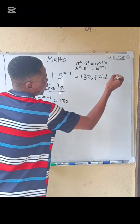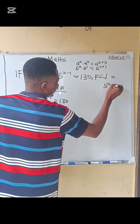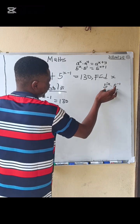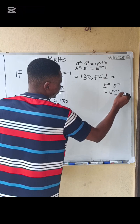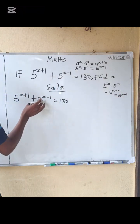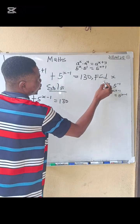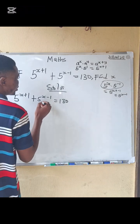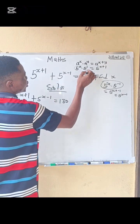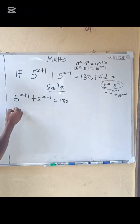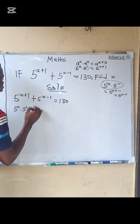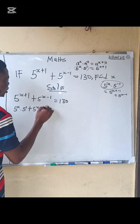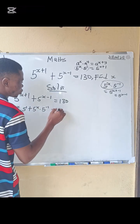Similarly, five to the power x minus one equals five to the x multiplied by five to the minus one. So I'm going to replace both terms: five to the x times five to the one, plus five to the x times five to the minus one, equals 180.